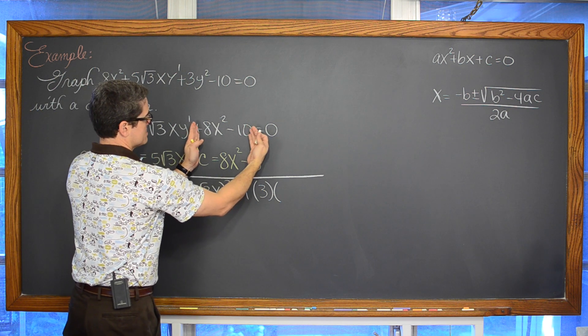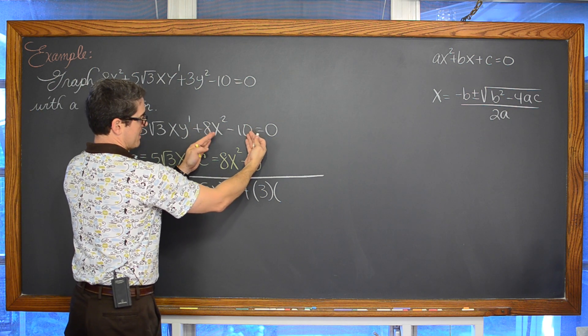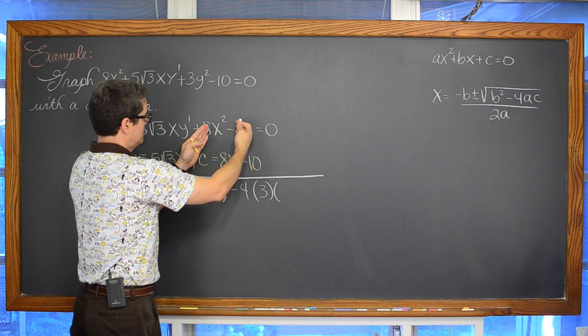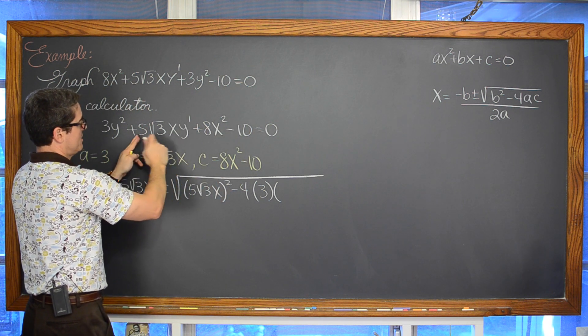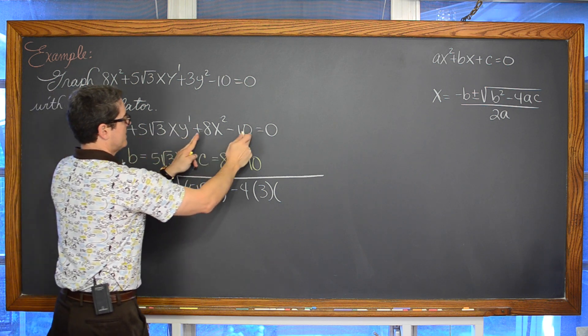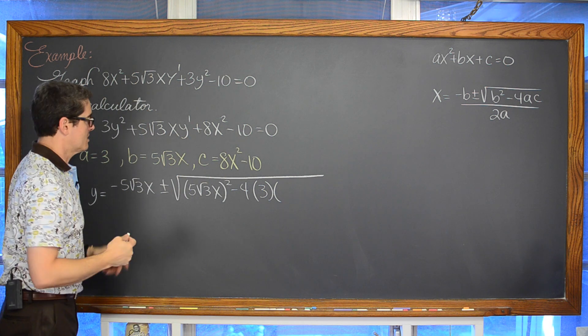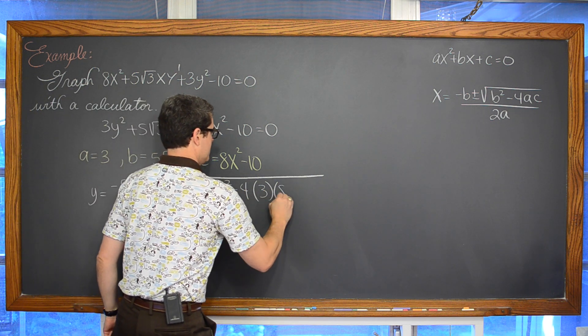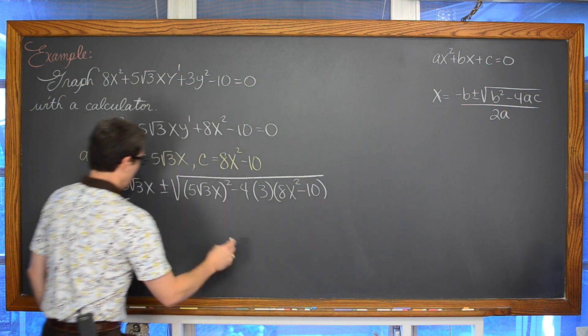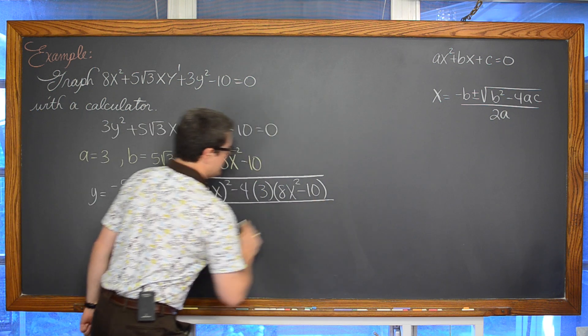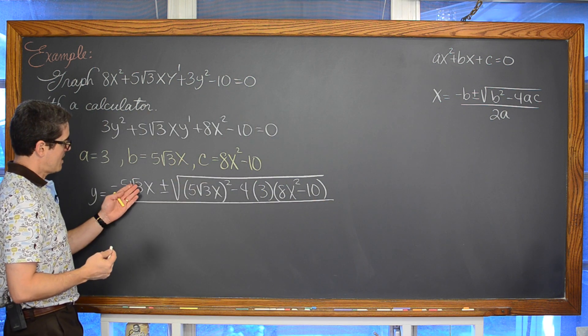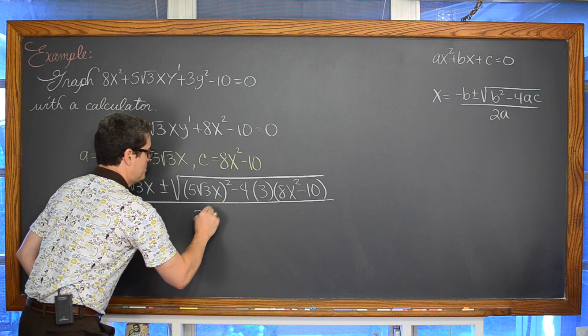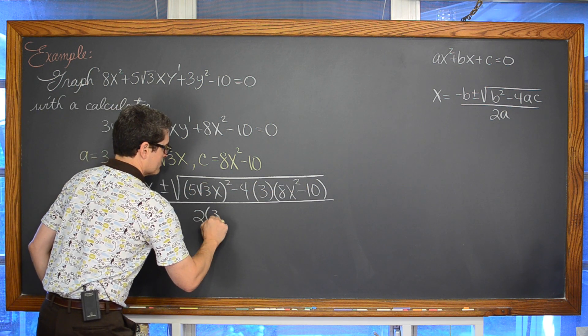Again, everything that does not have basically a factor of y in it, every other term is going to be our value of c, so we have 4ac, 8x² - 10, all of that over, opposite of b, plus or minus the square root of b² minus 4ac, all over 2a, and again that a value is 3.